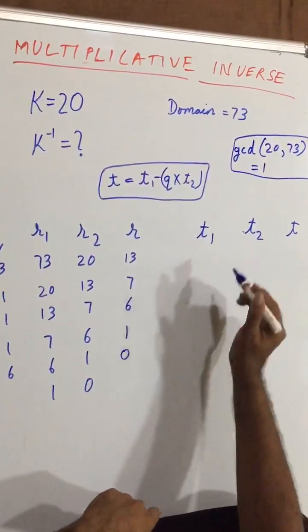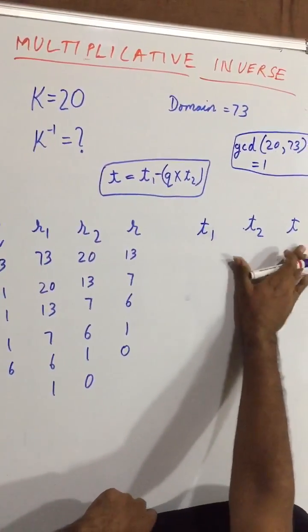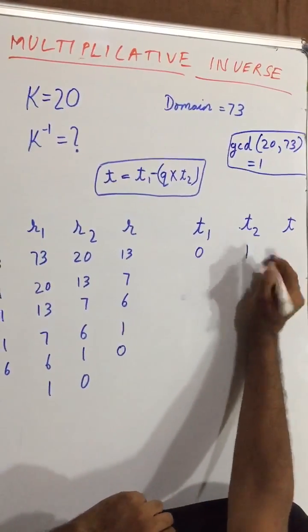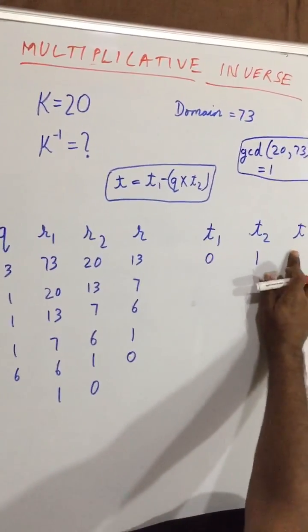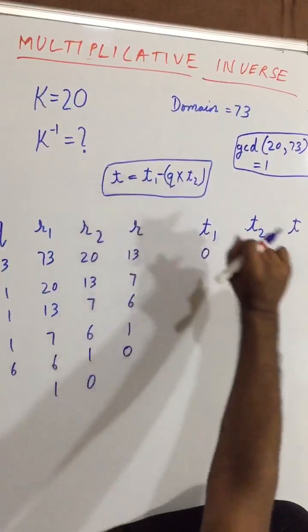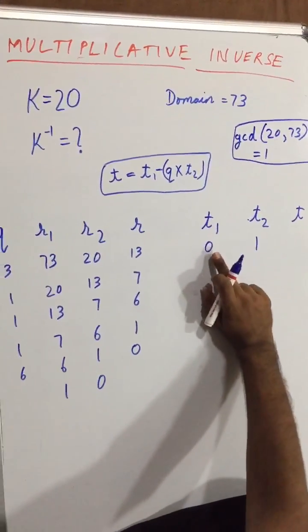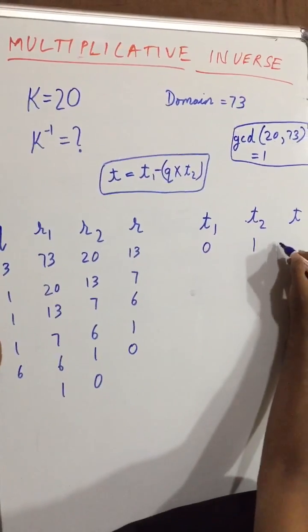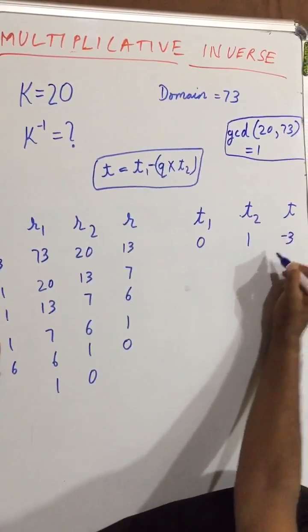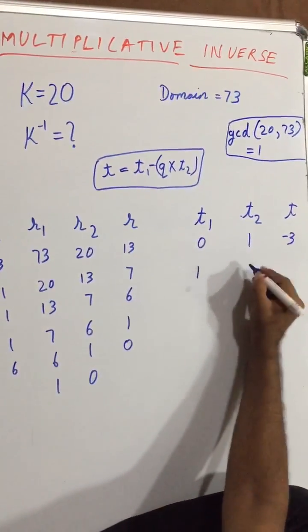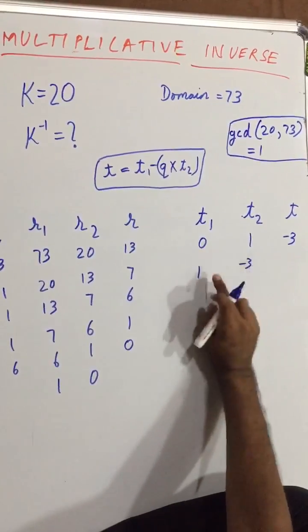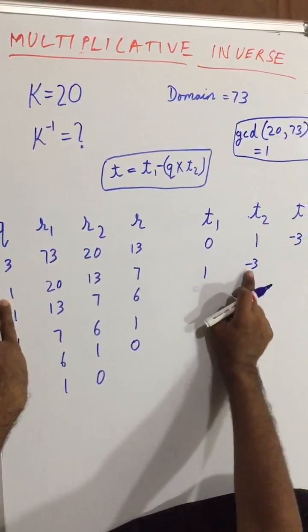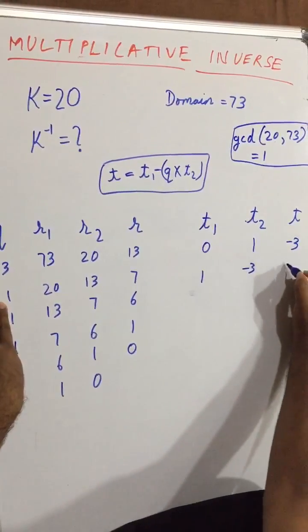Now let us move to find this t value. So to start with this, first of all we have to provide t1 and t2 as 0 and 1 always. Now let us find t value. So for t, the formula is t1 minus q into t2. So 0 minus 3 into 1, which would be equal to minus 3. Now again we have to shift this, so 1 and minus 3. So for here q value is 1, so 1 minus minus 3 into 1, which would be equal to 1 plus 3, which would be equal to 4.